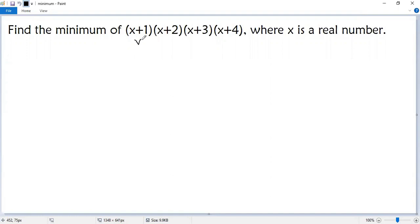The first factor and the last factor. So we get x squared plus 4x plus 1x, so 5x, and then plus 4. And the remaining pair, this and this. So we get x squared plus 5x plus 6.